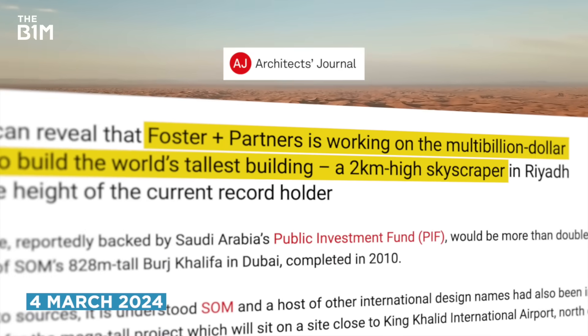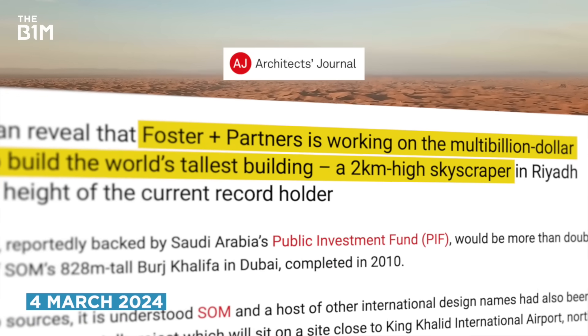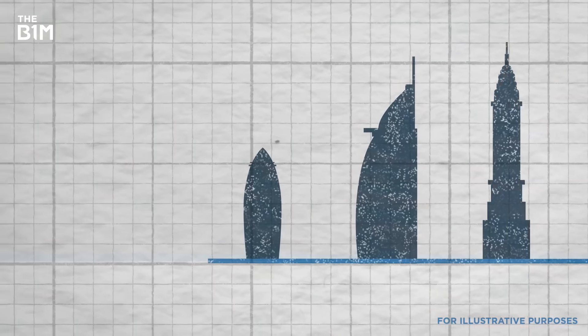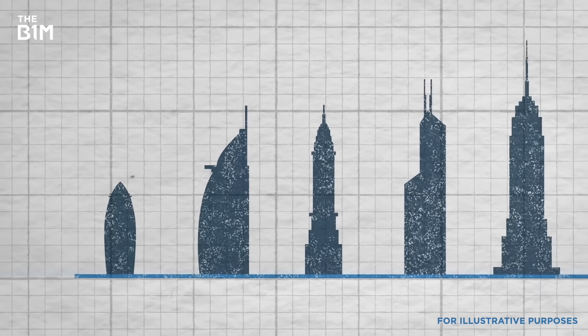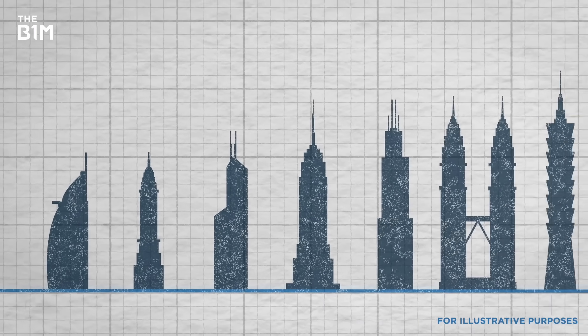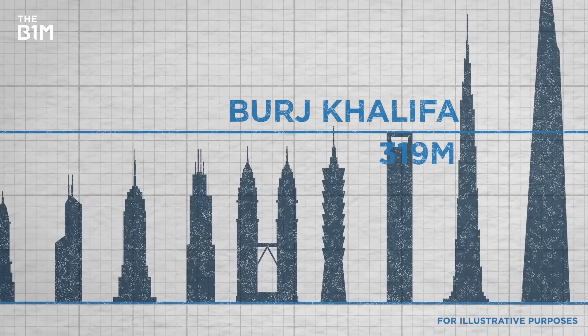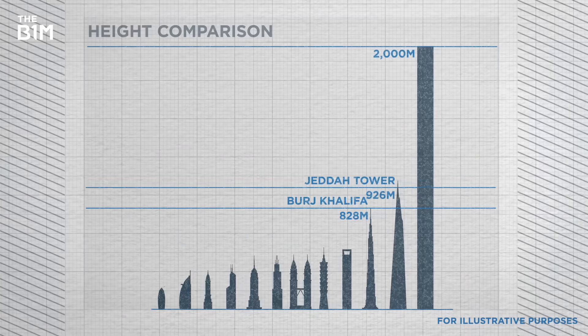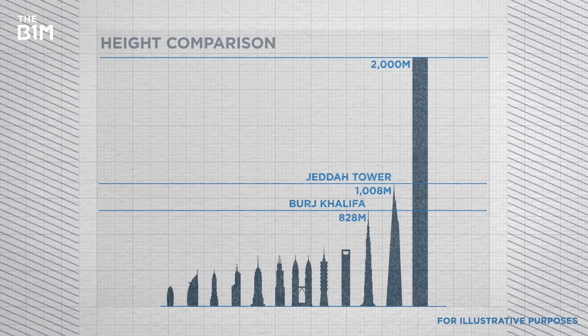Last month, it emerged that Saudi Arabia is working on a skyscraper that'll rise two kilometers into the sky from its desert sands. If constructed, it would easily surpass the world's current tallest building, the rather puny 828-meter Burj Khalifa, and even double Saudi Arabia's previous world record attempt, the Jeddah Tower.